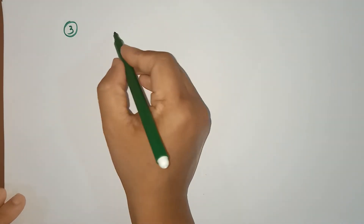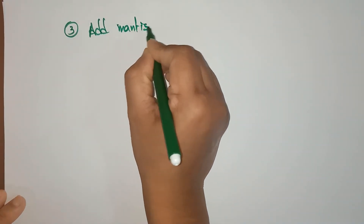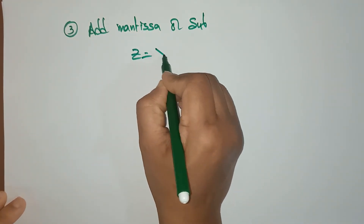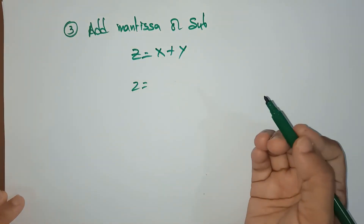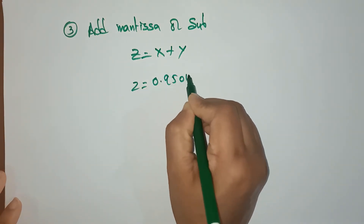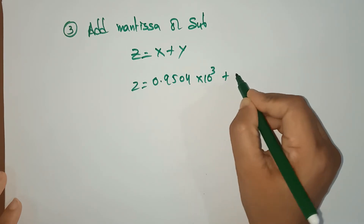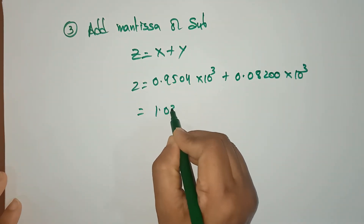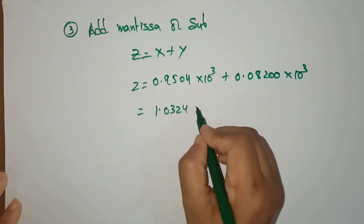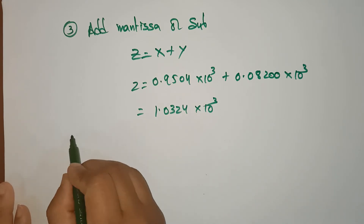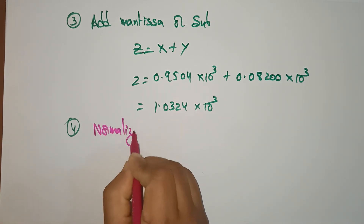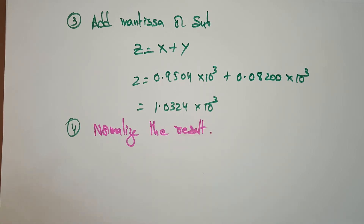Whenever both exponents are equal, we perform addition or subtraction. Third segment: add the mantissas. x + y = 0.9504 × 10³ plus 0.08200 × 10³ equals 1.0324 × 10³. The addition of the mantissas gives us 1.0324, and then we need to normalize the result.